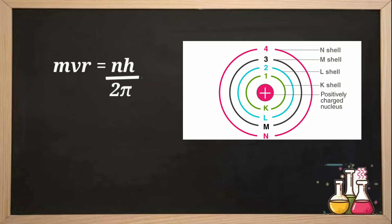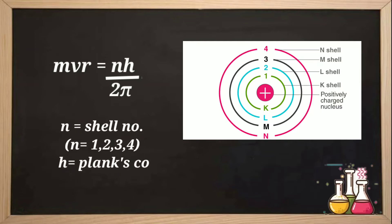If n equals 1, we are talking about the K shell. If n equals 2, we are talking about the L shell. So for any shell, the angular momentum can be written as L equals n·h upon 2π. Simplifying further, we get the quantization condition: m·v·r equals n·h upon 2π, where h is Planck's constant with value 6.626 × 10⁻³⁴ joules per second, m is the mass of the electron, v is its velocity, and r is the radius of the shell.